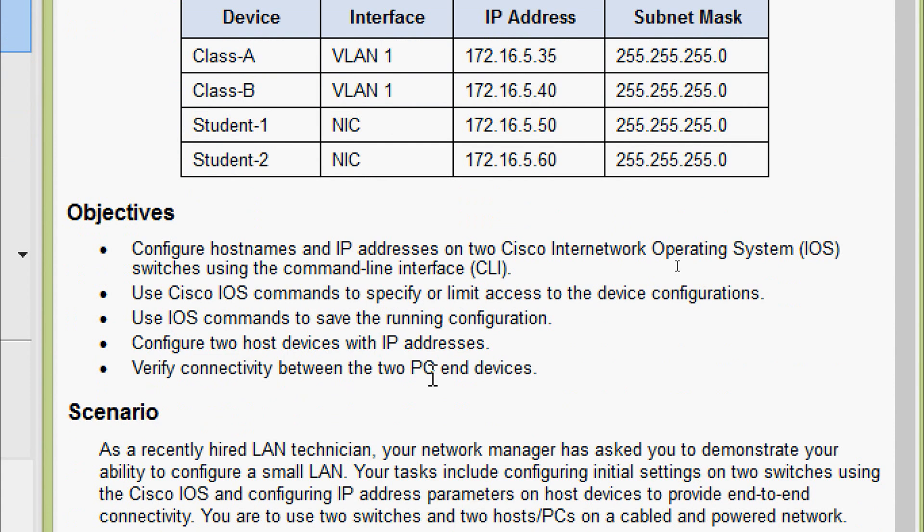The objectives are: configure hostnames and IP addresses on two Cisco IOS switches using the command line interface; use Cisco IOS commands to specify or limit access to device configurations; use IOS commands to save the running configuration; configure two host devices with IP addresses and verify connectivity between the two PCs.